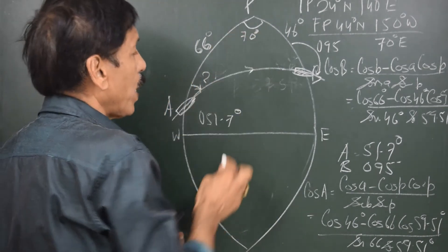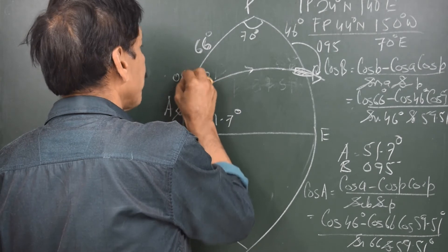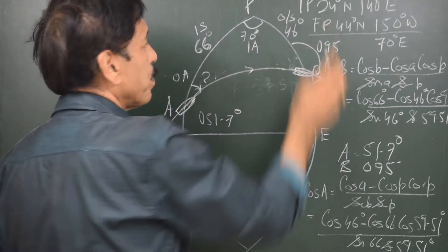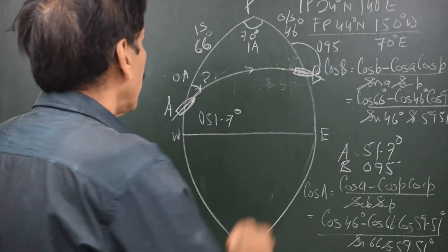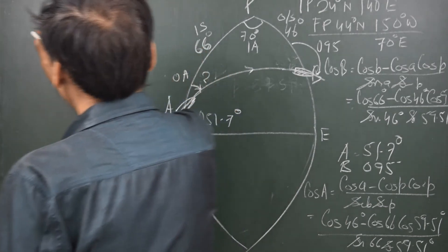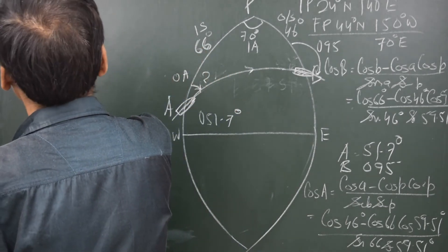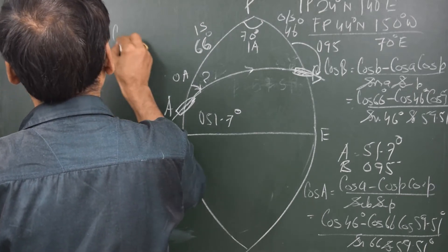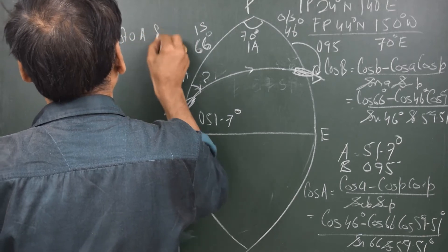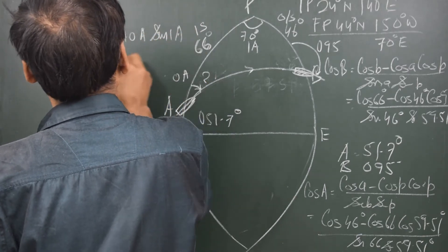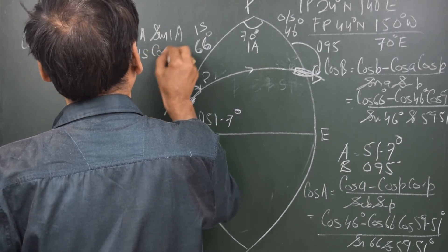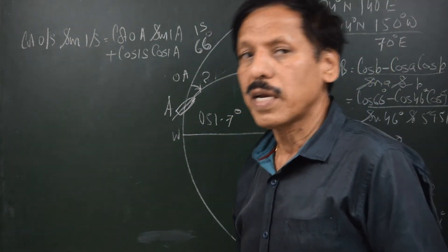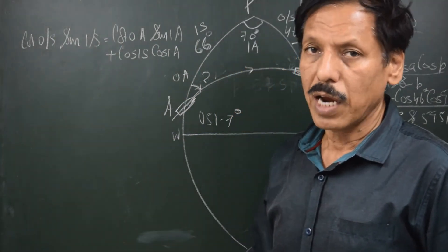Out of these four parts: this is the outer angle, this is the inner side, this is the inner angle, and this is the outer side. The formula which relates all of them is: cot(outer side) × sin(inner side) = cot(outer angle) × sin(inner angle) + cos(inner side) × cos(inner angle). Note that everything in this formula is positive — there is no negative sign.